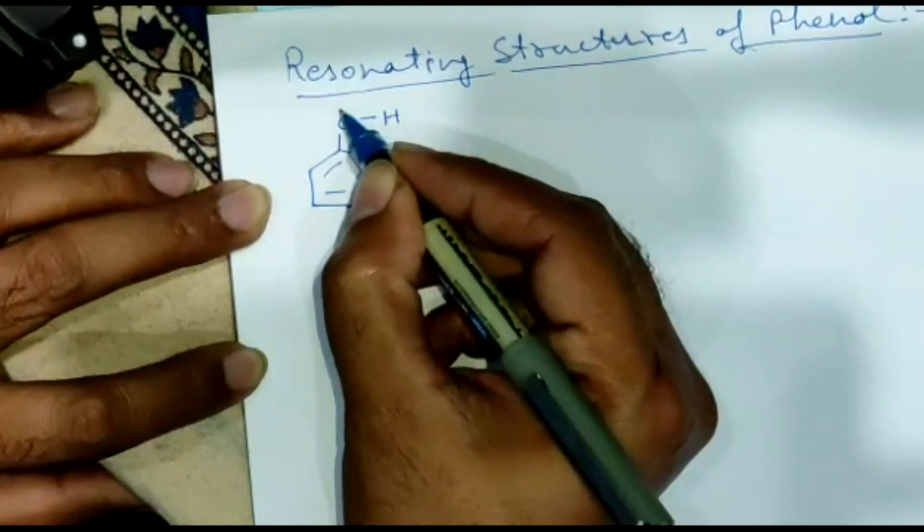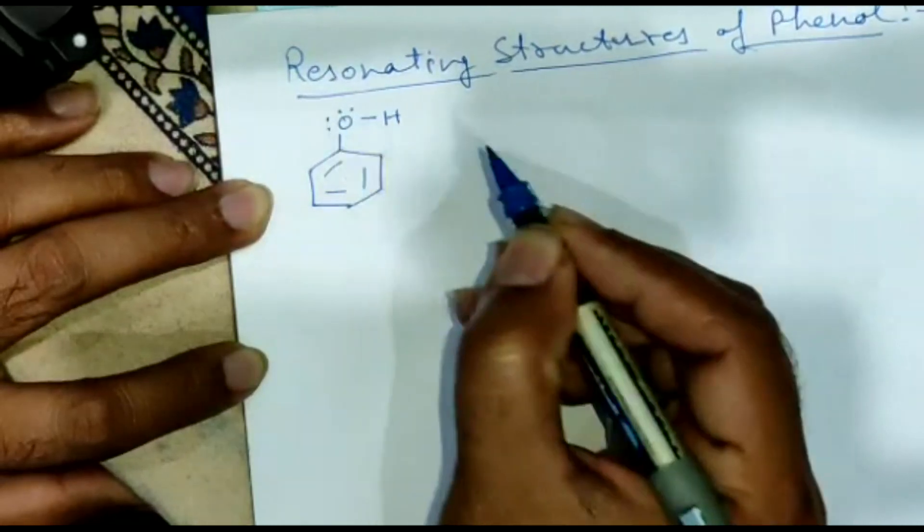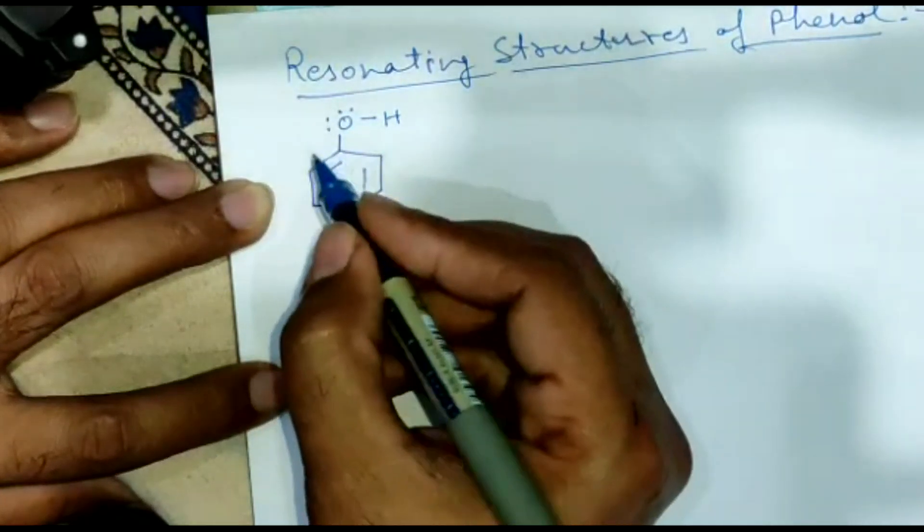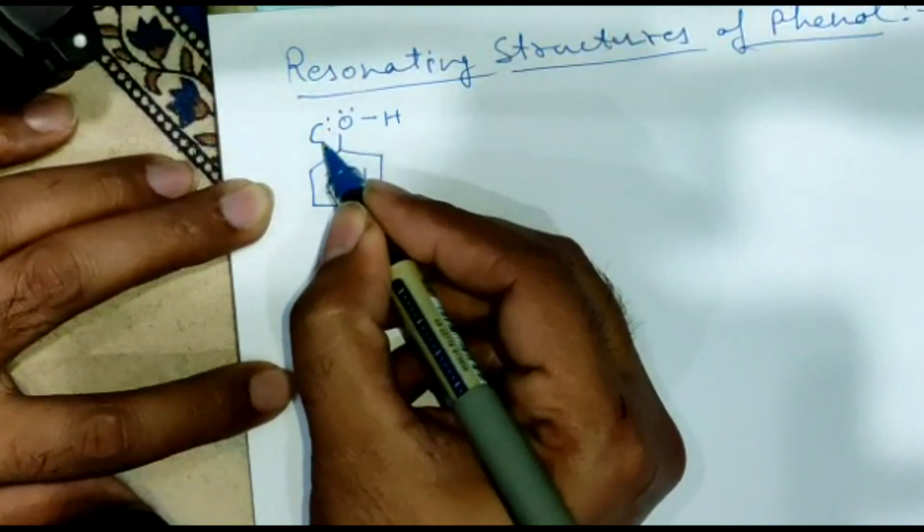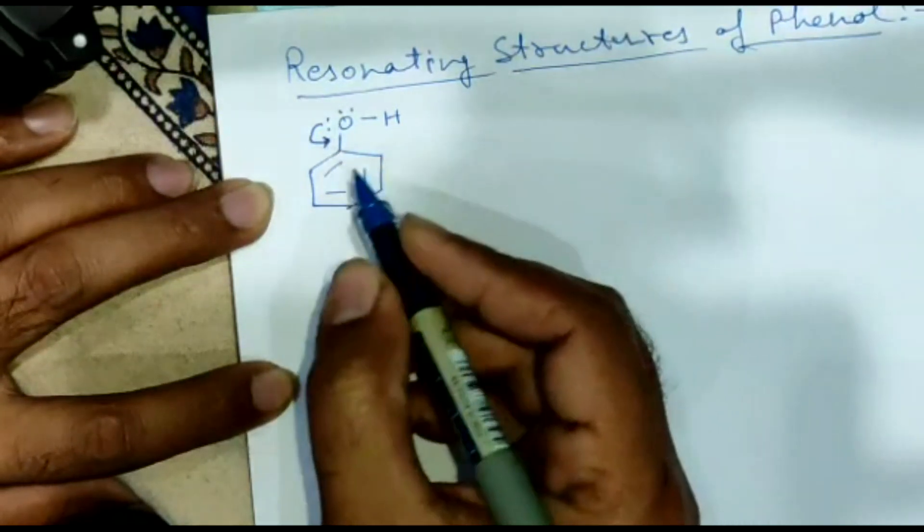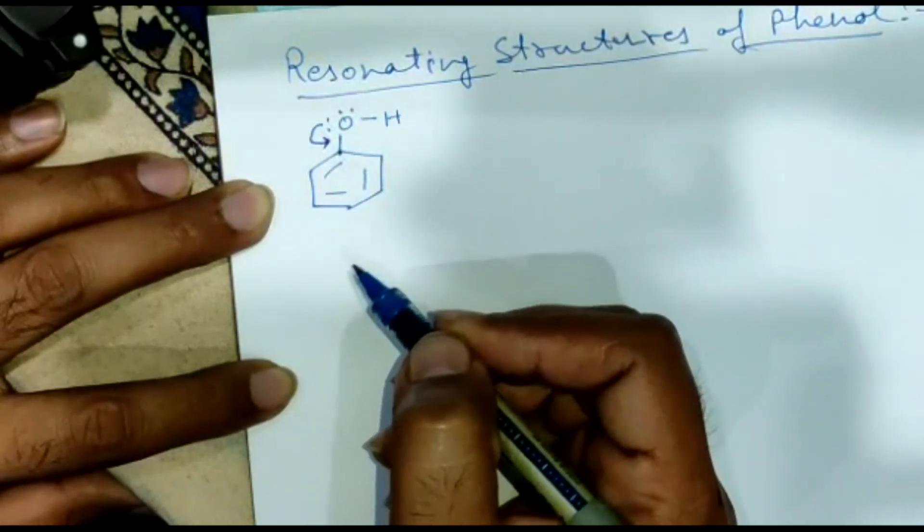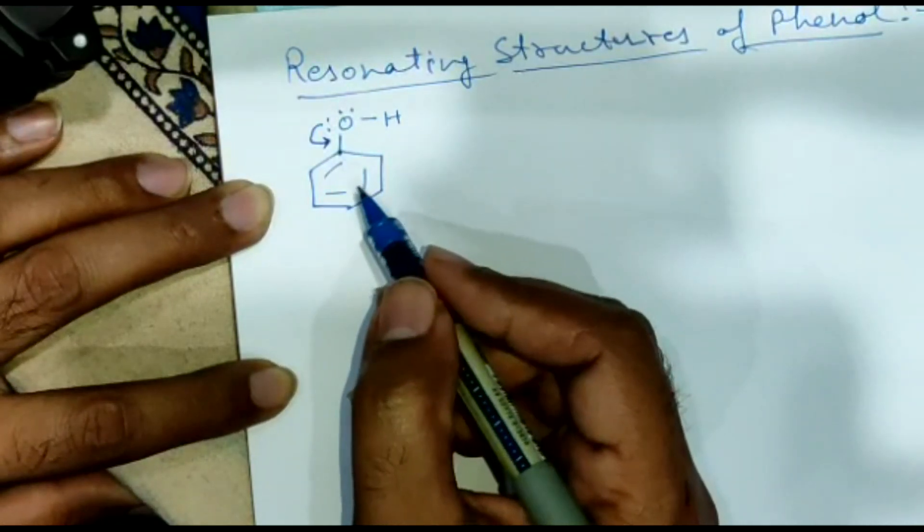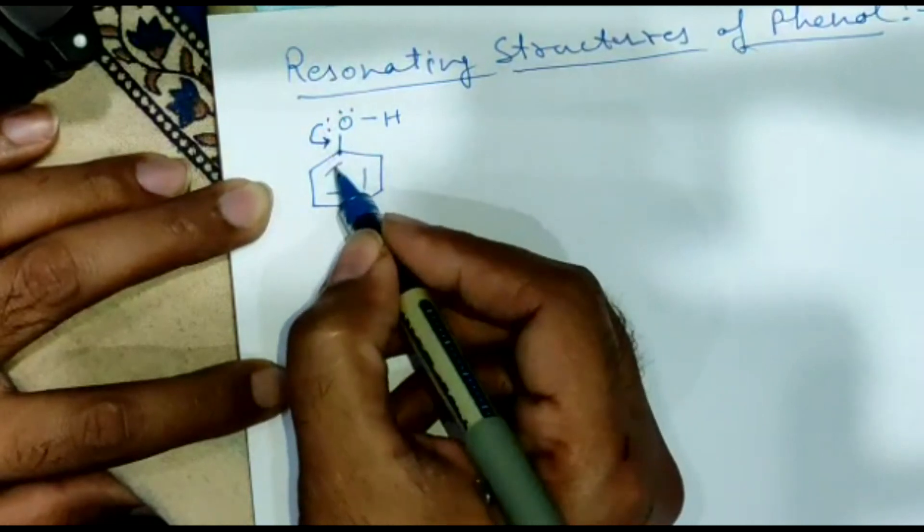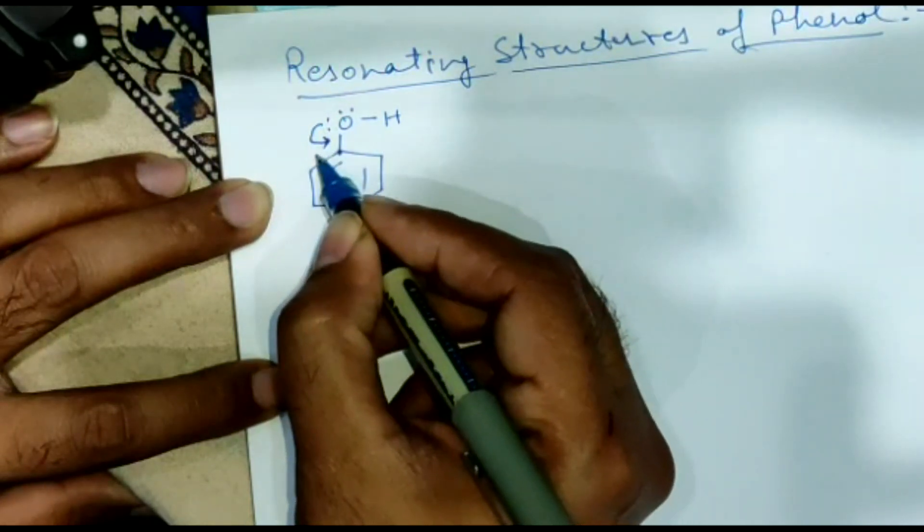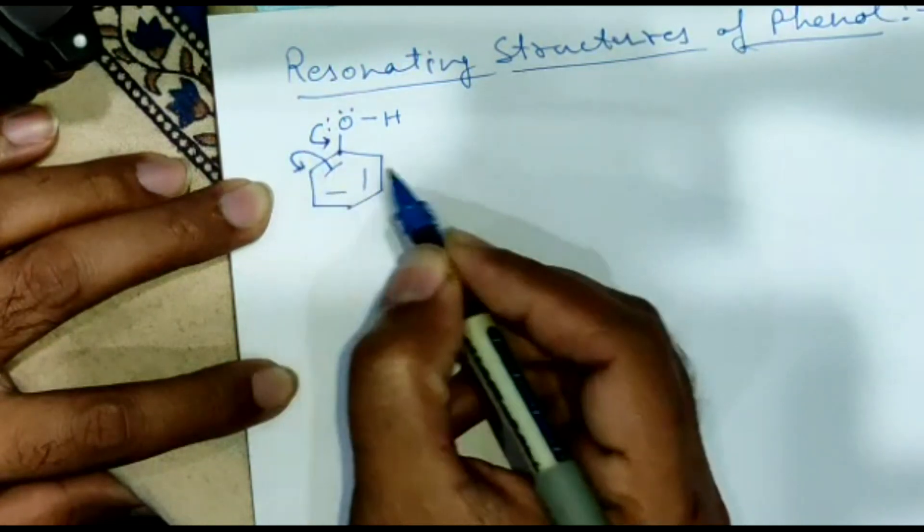OH, and over here the oxygen is having two lone pairs. Now how to draw the resonating structure? This lone pair comes over here. Now this carbon can have a maximum of four bonds which are already there, so one of the double bonds will break down and the electron will shift to this ortho position.